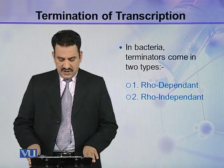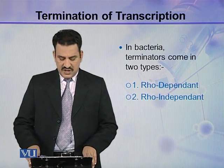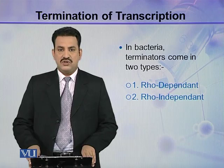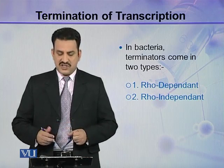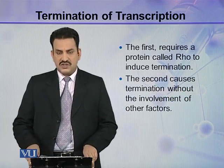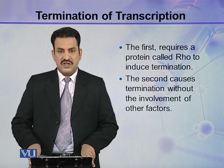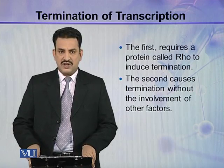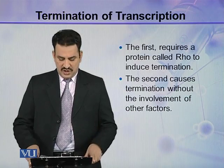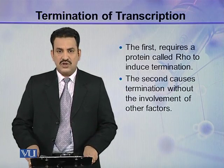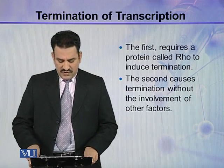In bacteria, terminators come in two types: RHO dependent and RHO independent. RHO is a factor which is involved in transcription. The first type requires a protein called RHO to induce termination, while in the second case — RHO independent termination — the termination doesn't involve any other factor.